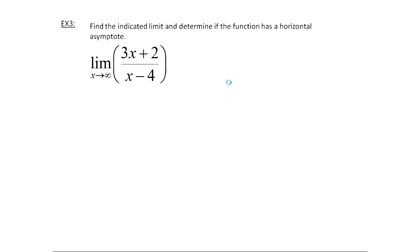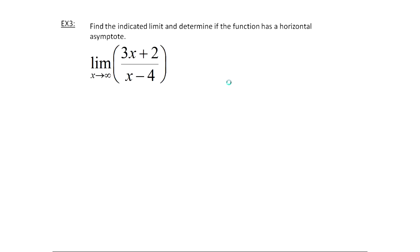What about our rational functions? I've changed the directions a little: find the indicated limit and determine if the function has a horizontal asymptote. If you just want to find the horizontal asymptote, you need to find the limit at infinity. There are some shortcut rules, but we're going to look at the limit aspect. Whether you're finding just a limit or determining if there's a horizontal asymptote, you're going to look at the highest degree terms of the numerator and the denominator.